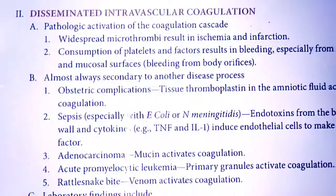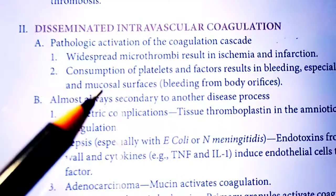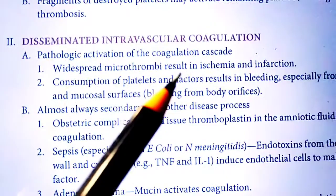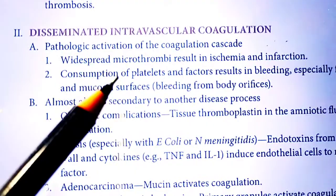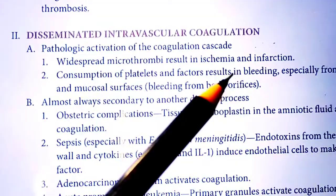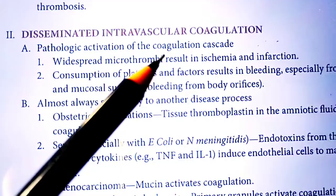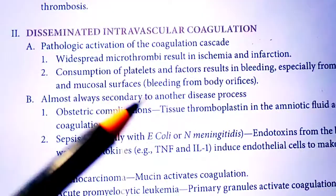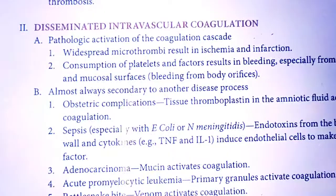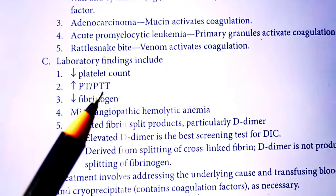Disseminated intravascular coagulation (DIC) has two key features: widespread micro-thrombi forming in small blood vessels causing ischemia and infarction, and simultaneously excessive bleeding because platelets and clotting factors are consumed making those thrombi. Laboratory findings show decreased platelet count, increased PTT and PT, and decreased fibrinogen.